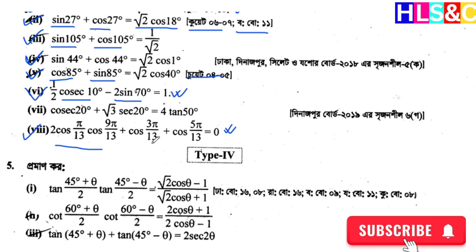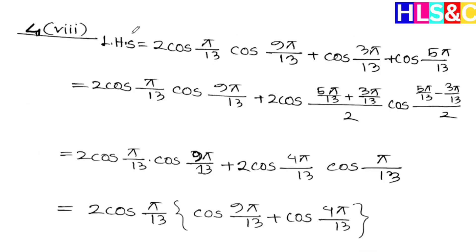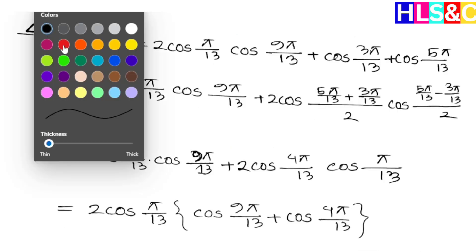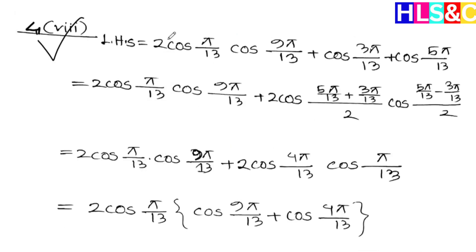Plus cos(3π/13) plus cos(5π/13) — we need to show what this equals. So let's see how to solve it. We'll simplify the left-hand side.